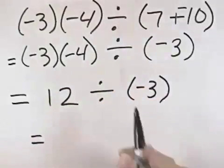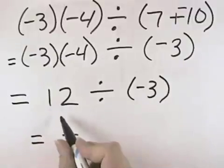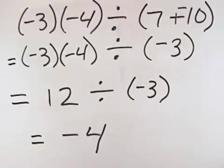Now our last operation is division. A positive divided by a negative is negative, and 12 divided by 3 is 4. So our answer is negative 4.